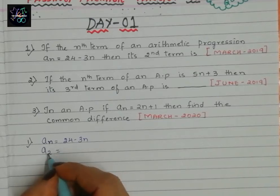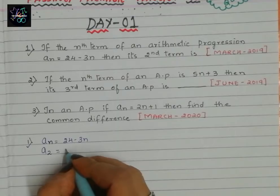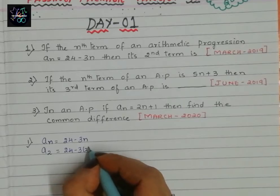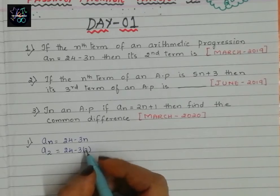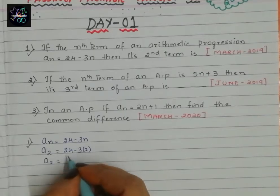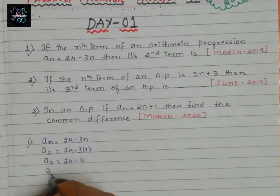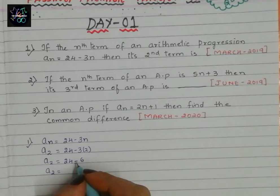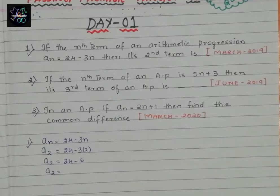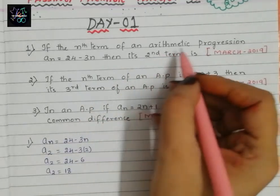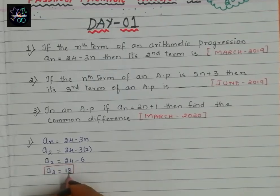a2 is the second term. a2 equals 24 minus 3 times 2, because they asked for the second term. That gives us 24 minus 6. So a2 equals 18. The second term of this AP is 18.